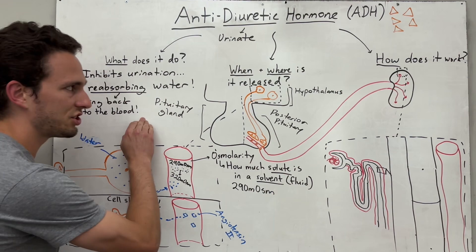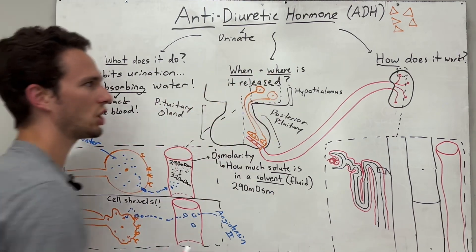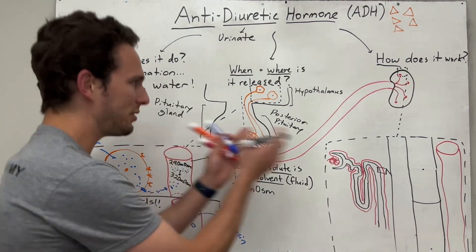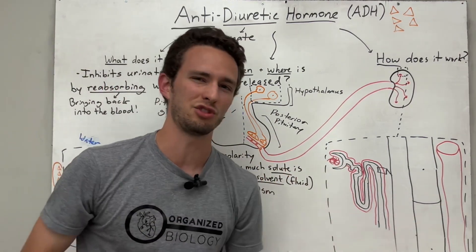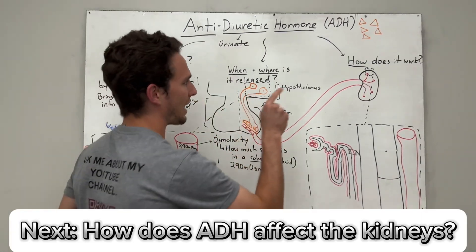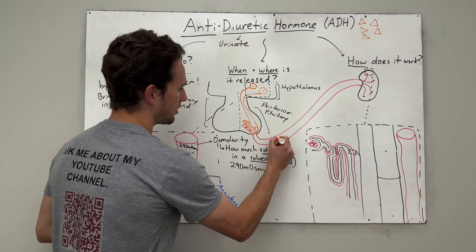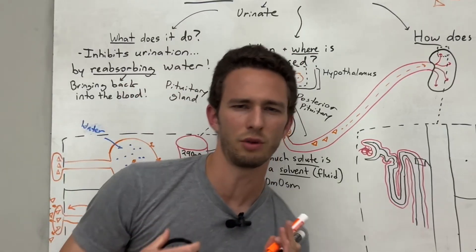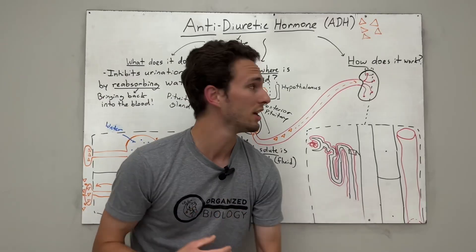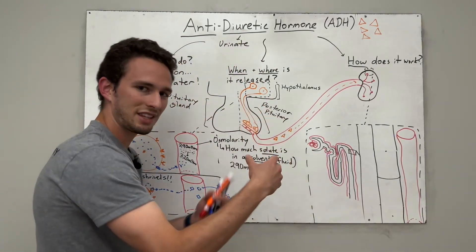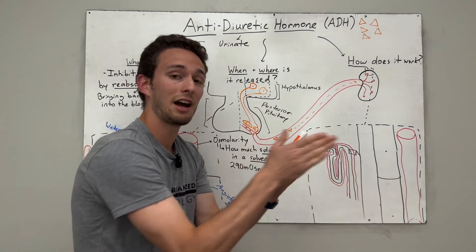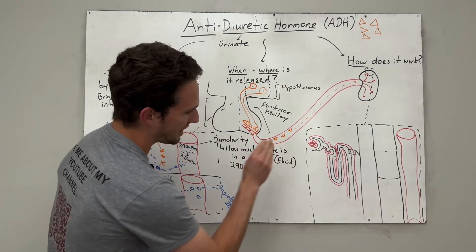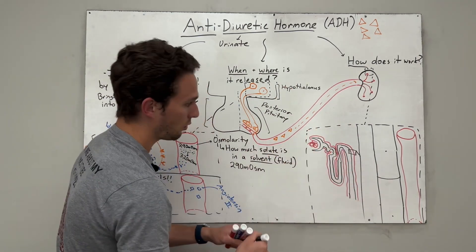So now we know what ADH does, when and where it is released. But now we need to figure out how it actually works. How is this little molecule called ADH going to bring water back into the bloodstream on a big scale? Well, in order to figure that out, we've got to look at the kidneys. The ADH is going to travel to the kidneys. We know that the kidneys are the filters of our blood, so they're going to keep some stuff in the blood and excrete stuff out as urine. The question is, how does this hormone change what the kidney is excreting so that instead of peeing out more water, we're going to bring that water back into the bloodstream?